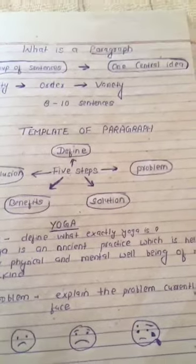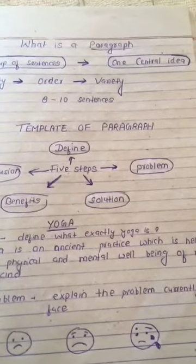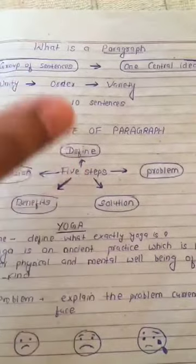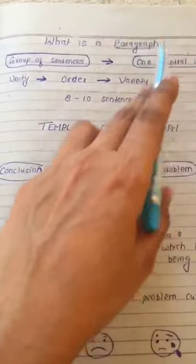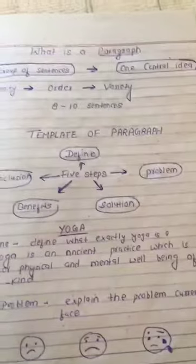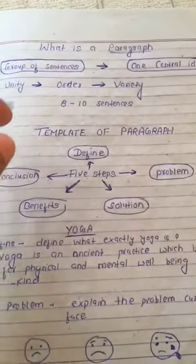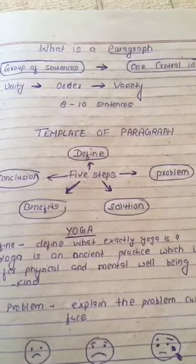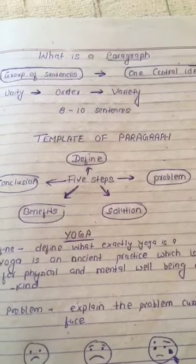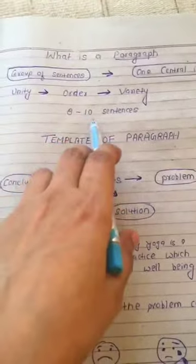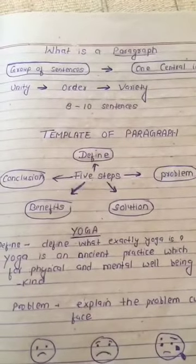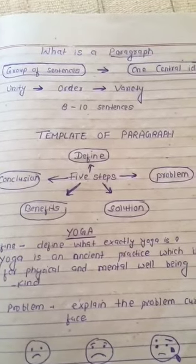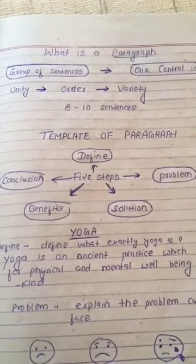To repeat: a paragraph is a logically grouped set of sentences focused on a central idea. The sentences must have unity, order, and variety. The paragraph can be of any length, but it is generally 8 to 10 sentences when asked in an examination.